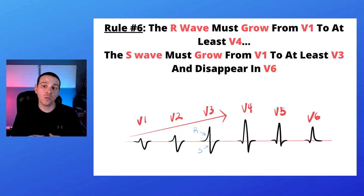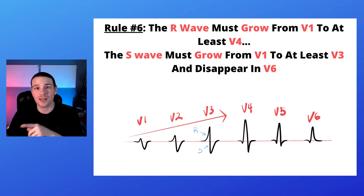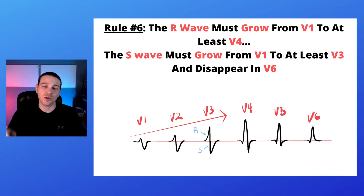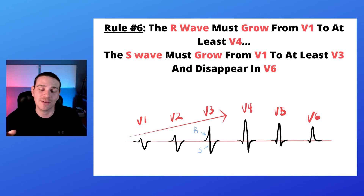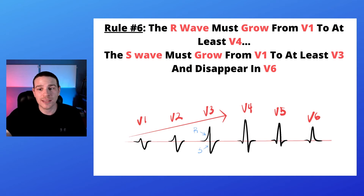Rule number six: the R wave must grow from V1 to at least V3 and then disappear in V6. Looking at the image below, we can see the R wave is progressively getting bigger from V1 until V4. And the S wave, which is deflected downward, is progressively getting bigger and then smaller until it disappears in V6.